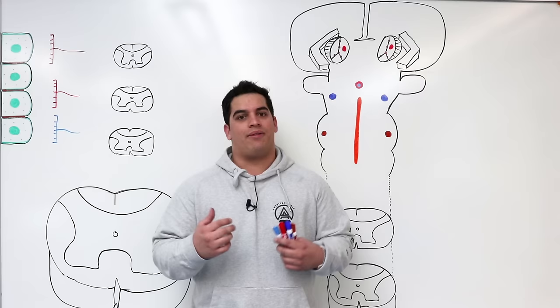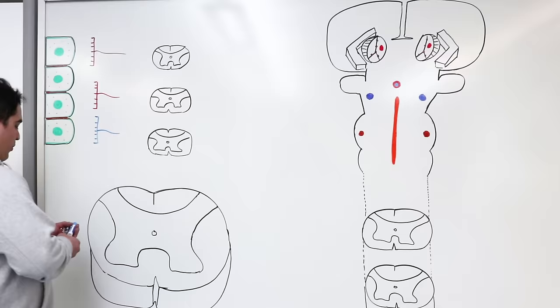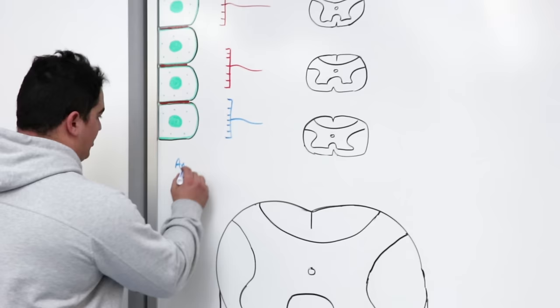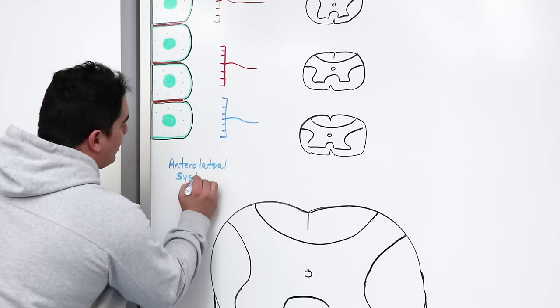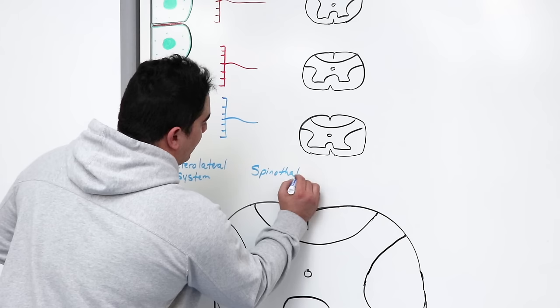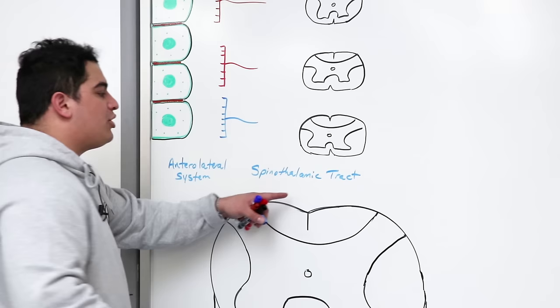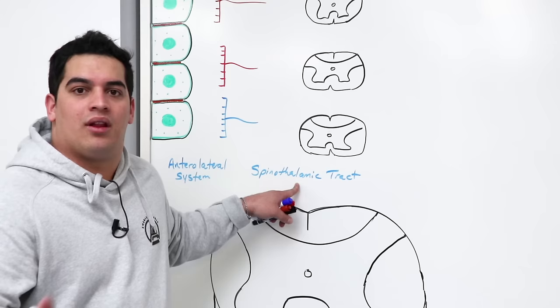When we talk about this system — the anterolateral system, another name for it is the spinothalamic tract — it's actually broken up into two parts: the anterior or ventral spinothalamic tract, and the lateral spinothalamic tract.